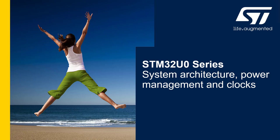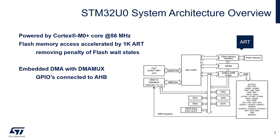In this part, I'm going to talk about the system architecture, the power management, and the clocks of the STM32 U0. So let's start by looking at the system architecture. This is a typical and classic STM32 architecture. You have the bus matrix right there in the middle, and then we have two masters on it: the ARM Cortex M0+ core running up to 56 MHz.